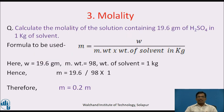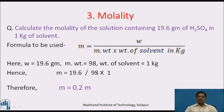Molality numerical: Calculate the molality of a solution containing 19.6 grams of sulfuric acid in 1 kilogram of solvent. Formula: small m = weight / (molecular weight × weight of solvent in kilograms). Given: weight = 19.6 grams, molecular weight = 98, weight of solvent = 1 kg. Calculation: m = 19.6 / (98 × 1) = 0.2. The answer is molality = 0.2 molal.